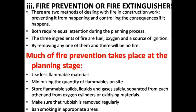For fire prevention, there are two methods: preventing fire from happening and controlling consequences if it does happen. The three ingredients for fire are fuel, oxygen, and a source of ignition — removing any one eliminates fire. Prevention measures include using less flammable materials, minimizing flammables on site, safely storing flammable solids, liquids, and gases separately from oxygen cylinders, removing rubbish regularly, and banning smoking in appropriate areas.